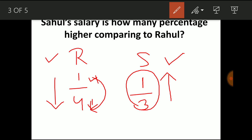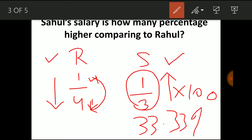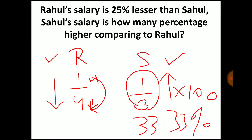To convert the fraction to percentage, multiply by 100. So 1 by 3 into 100, you get 33.33 percentage. So Rahul's salary is 25 percentage lesser than Sahul, and Sahul's salary is 33.33 percentage higher comparing to Rahul.